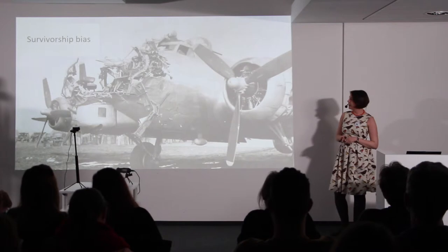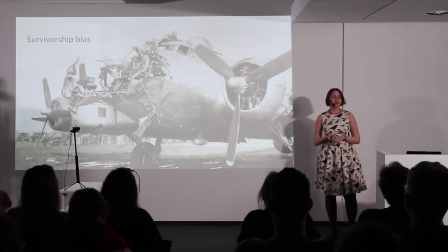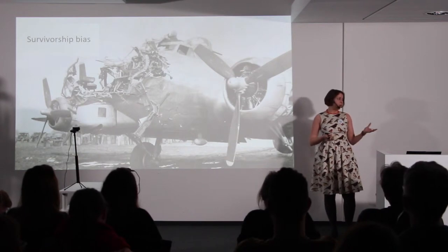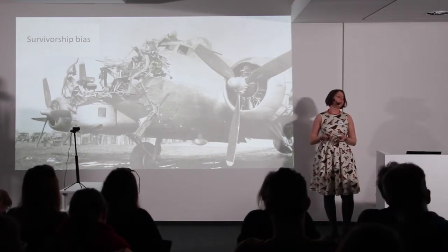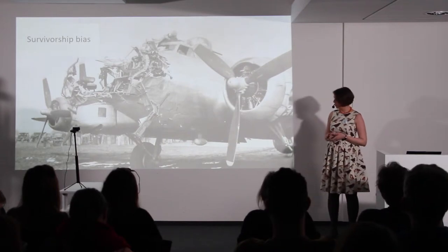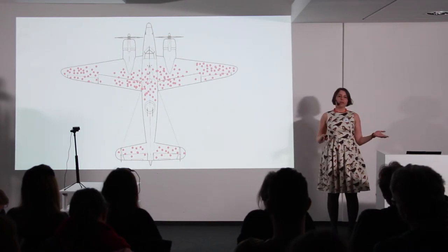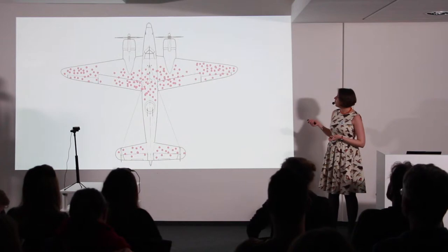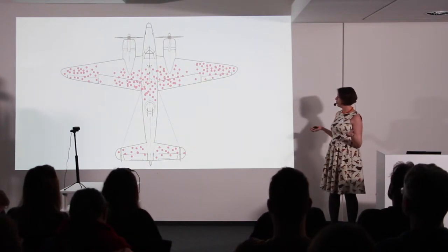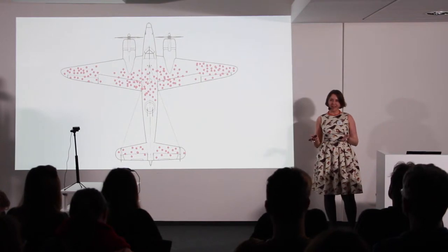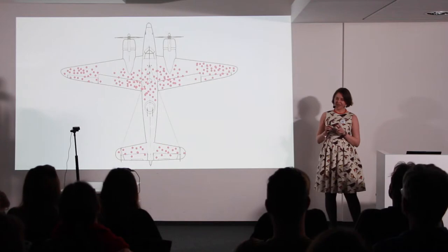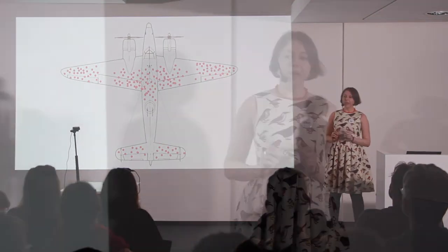A vivid example of this cognitive bias is a situation which happened during World War II in the US Army. The US Army wanted to reinforce their aircraft to prevent damage so that more aircraft and more people would survive. So they looked at all the aircraft that came back to the base and identified where the most damage was. They put markers on the places with the most damage, and then the military thought they should put more armor in those places so the aircraft would be more stable. It sounds reasonable, right?